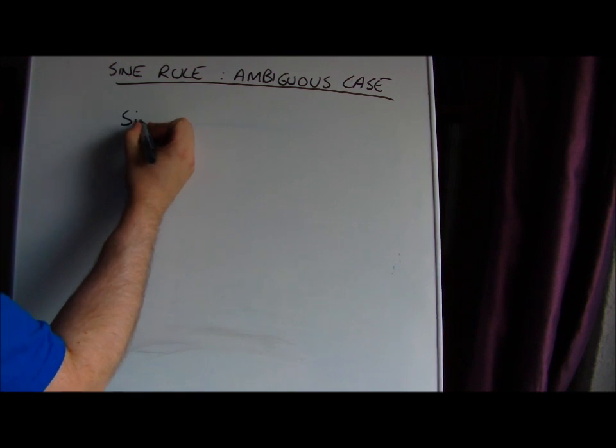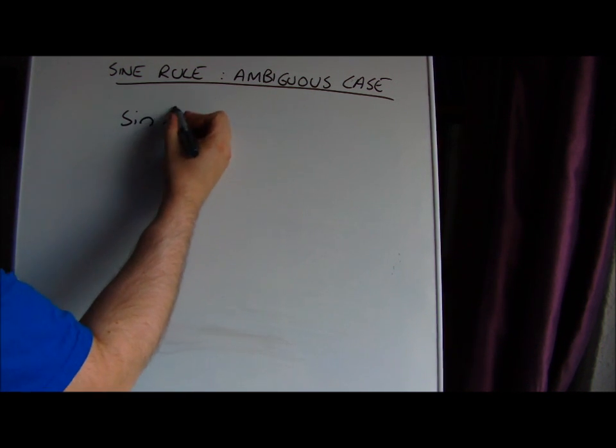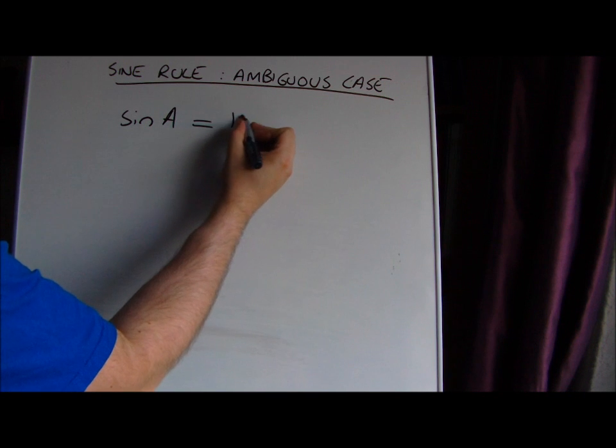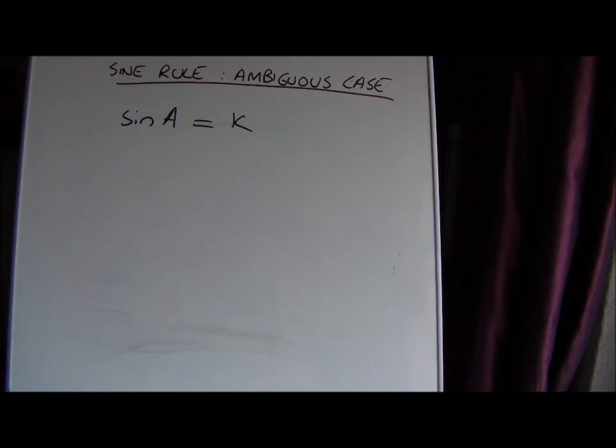The reason is, when we're solving with the sine rule, we generally get an equation where sine A equals some value to solve. In previous examples we just did inverse sine and got the angle, but we should check that there is another value.